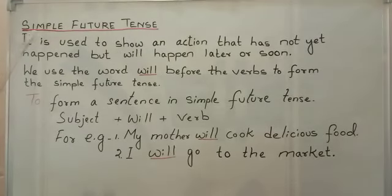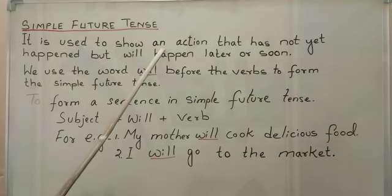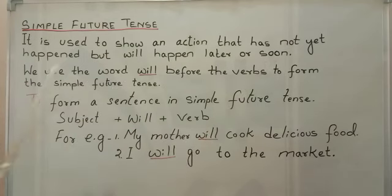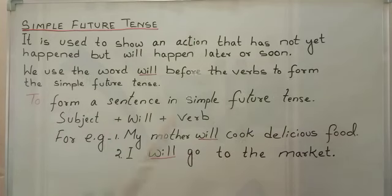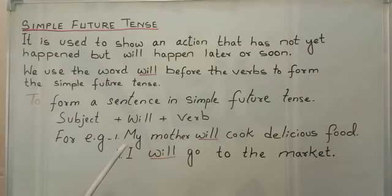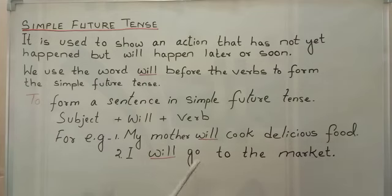Lastly, let us learn simple future tense. It is used to show an action that has not yet happened but will happen later or soon. We use the word will before the verb to form the simple future tense. To form a sentence, we need subject plus will plus verb. For example, my mother will cook delicious food. I will go to the market. Thank you.